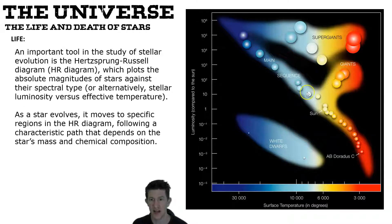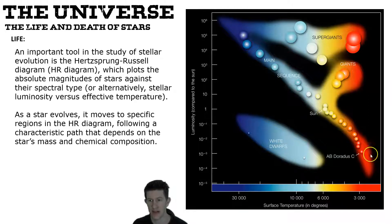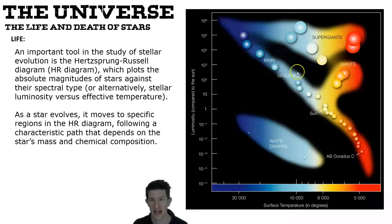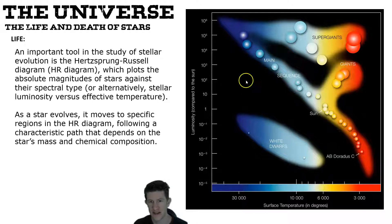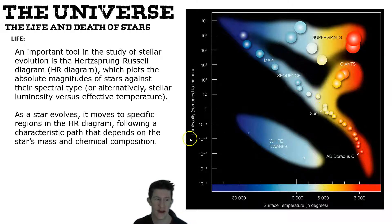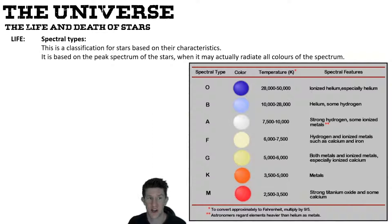A very hot object isn't just 'red hot' — red is actually the coolest visible temperature. Orangey-yellow is hotter than red, and blue to violet is the hottest end of the visible spectrum. The HR diagram shows how stars live over time: they generally follow what we call the main sequence, either getting hotter or cooling down as they age.